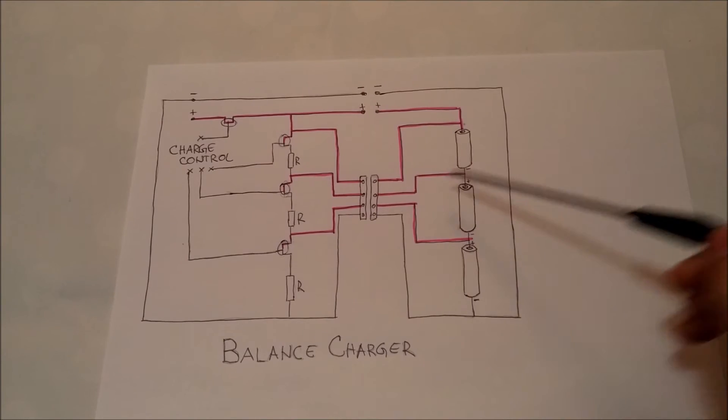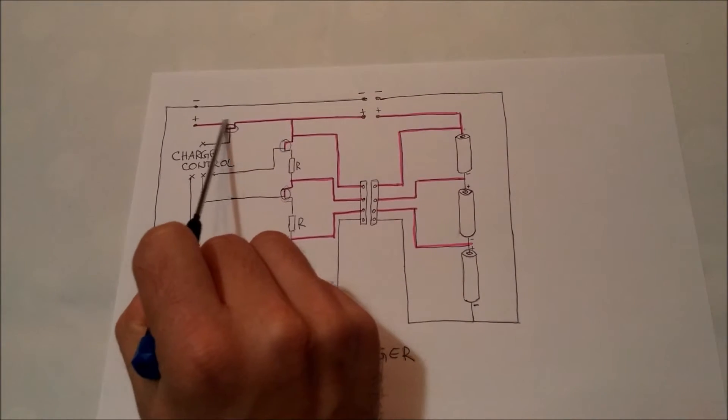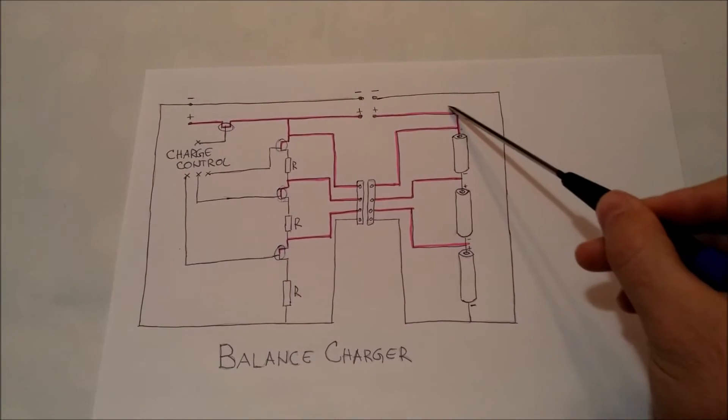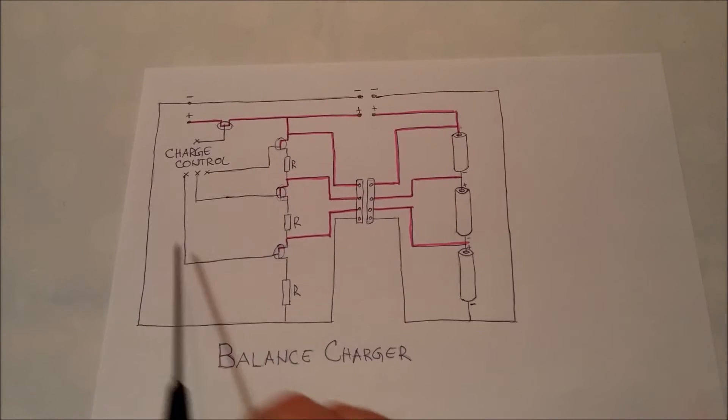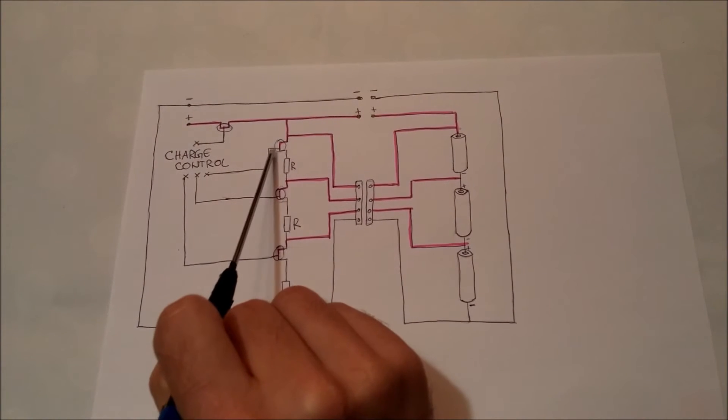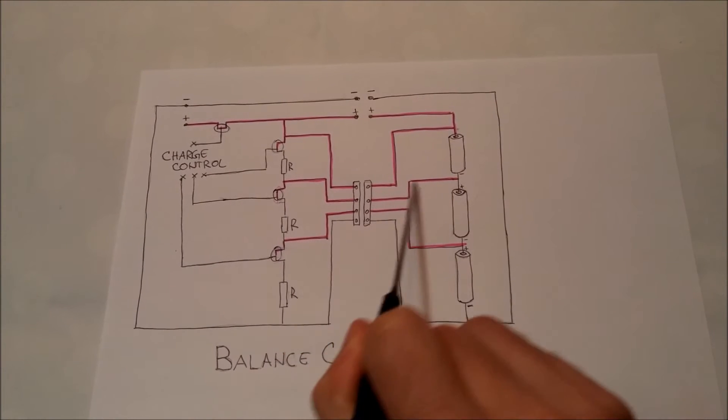At that moment, the charging control logic turns off this line here and stops the charging of the system, but also turns on this switch and closes the circuit here.